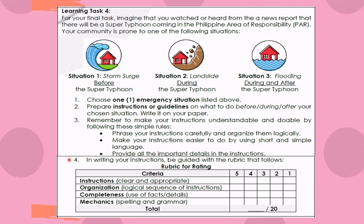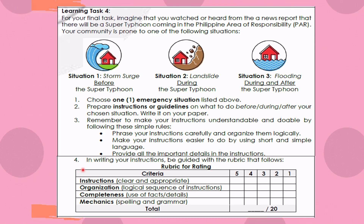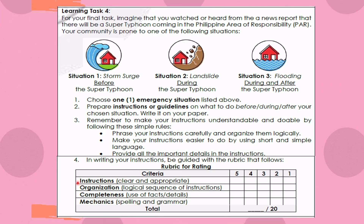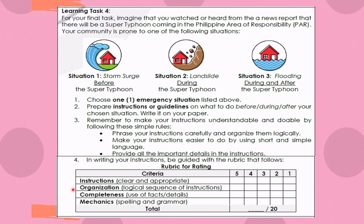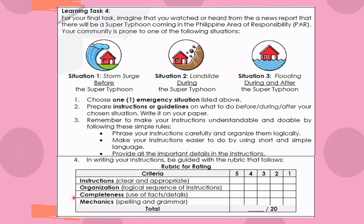In writing your instructions, you should be guided by the following rubric. The criteria are: instructions — if it is clear and appropriate; organization — if it follows a logical sequence of instructions; completeness — if it uses facts and details; and mechanics — covering spelling and grammar.